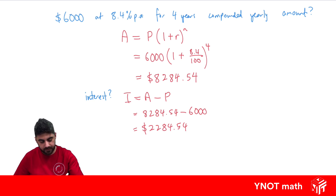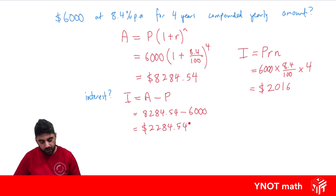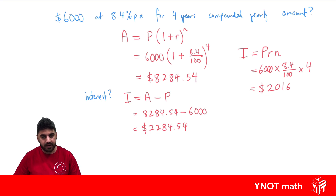Let's do the same question but with simple interest. Simple interest is the starting amount times the rate times the time period — six thousand times 8.4 divided by 100 times four — which gives us two thousand and sixteen dollars. You can see that compound interest for the exact same rate, same money, and same time period earns more interest than simple interest. That's because with compound interest, interest is calculated after year one, then again after year two, three, and four, earning interest on the interest from each previous year. Simple interest is all just calculated at the end.